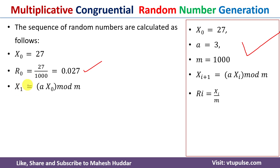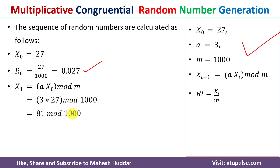Now we need to calculate X₁. X₁ = a · X₀ mod m. Here a = 3, X₀ = 27, m = 1000. So 3 × 27 mod 1000 = 81 mod 1000. Since 81 is less than 1000, the remainder is 81, so X₁ = 81.